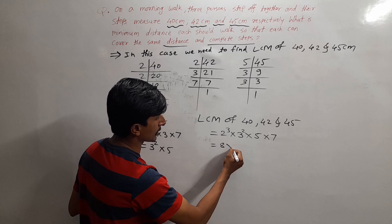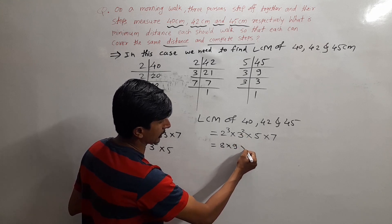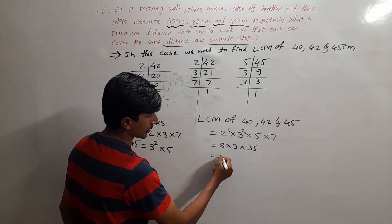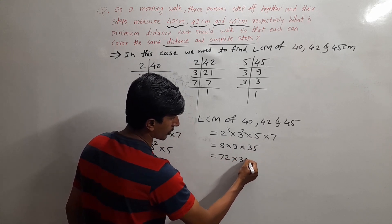So 2³ is 8, 3² is 9, and 5 × 7 is 35. Then 8 × 9 is 72, times 35.